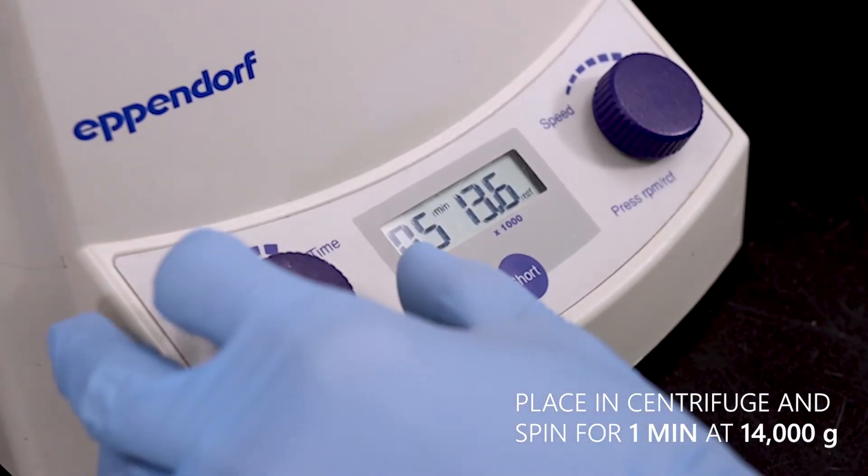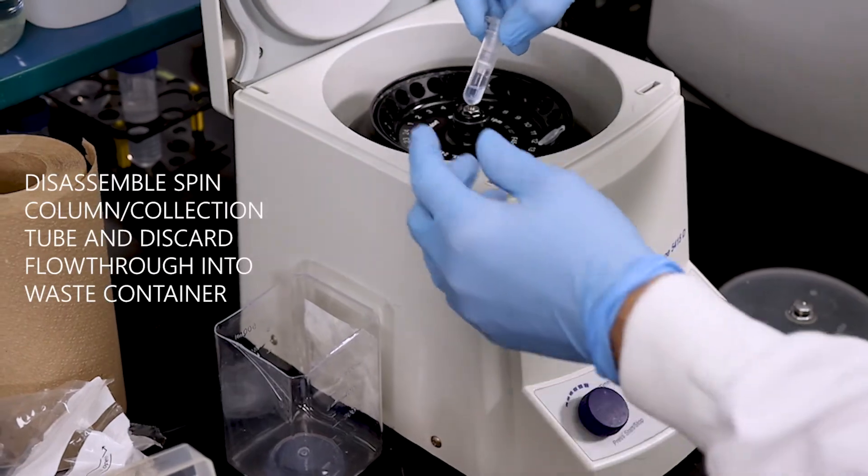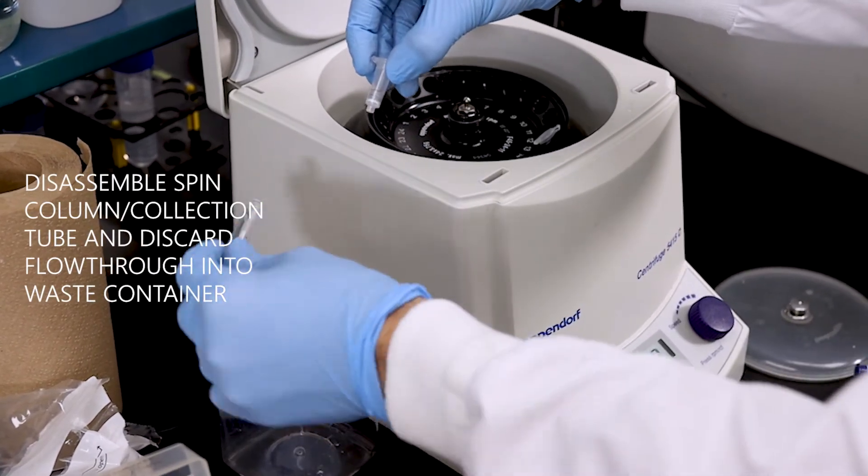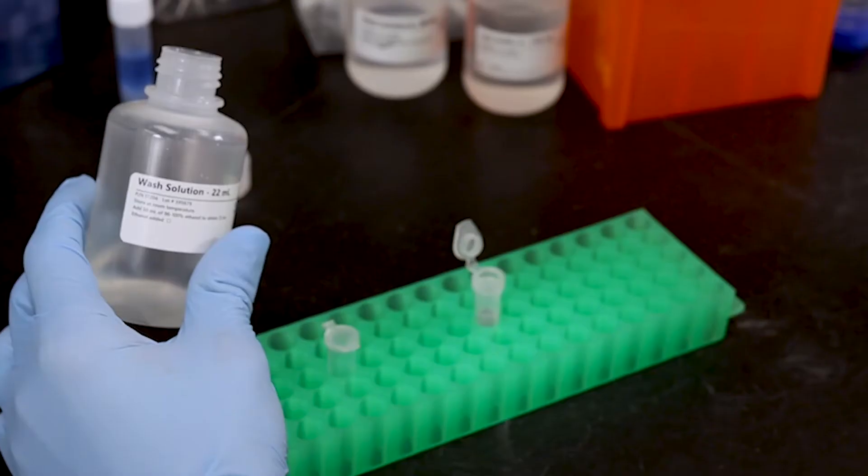Centrifuge the sample for 1 minute at 14,000 G. Discard the flow through into a waste container. Reassemble the spin column and collection tube. Repeat this step until all the lysate has been passed through the spin column.